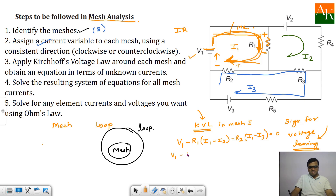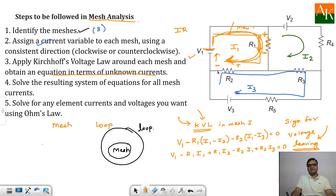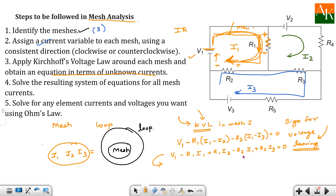Solving: V1 minus R1(I1 minus I2) minus R2(I1 minus I3) = 0, which gives V1 minus R1·I1 plus R1·I2 minus R2·I1 plus R2·I3 = 0. Rearranging into nice format with unknowns on one side: (R1 + R2)·I1 minus R1·I2 minus R2·I3 = V1. This is equation number 1.